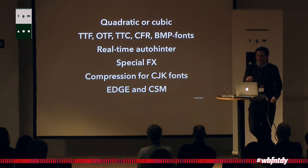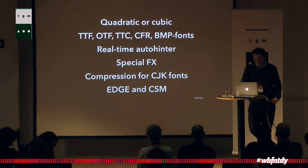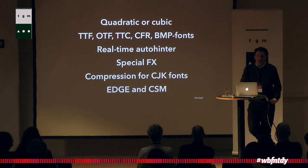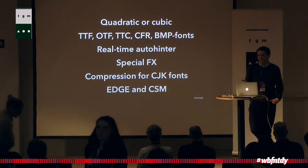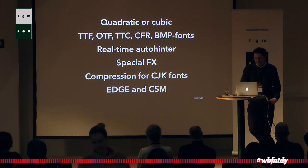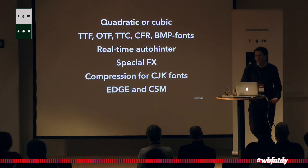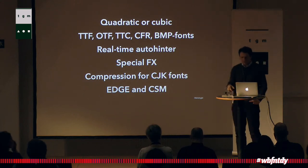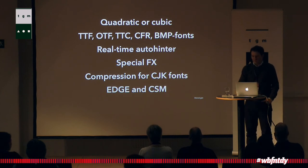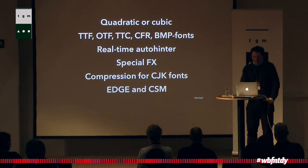iType does special effects like glowing, drop shadow, and embossing. It also has a number of compression techniques for CJK fonts. Since we license this software to people who make devices like mobile phones or car displays, they have memory constraints — a lack of memory and CPU power. CJK fonts can easily be 20 megabytes; with our compression technologies, we're able to compress them down to 4 or 5 megabytes.